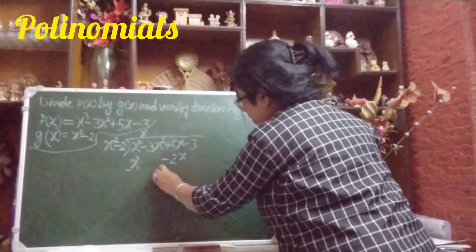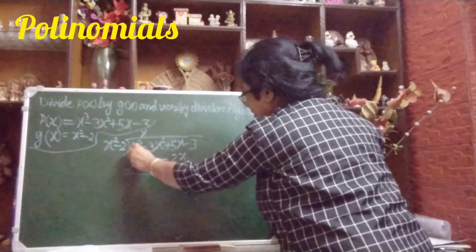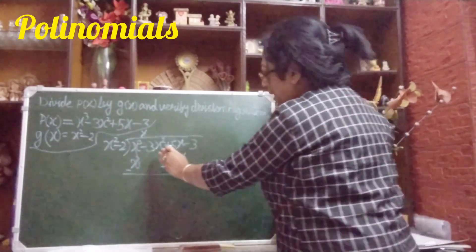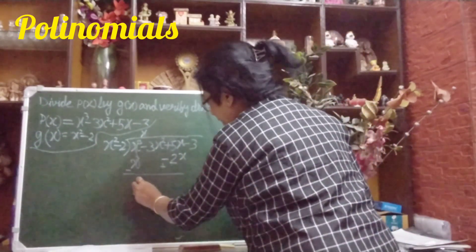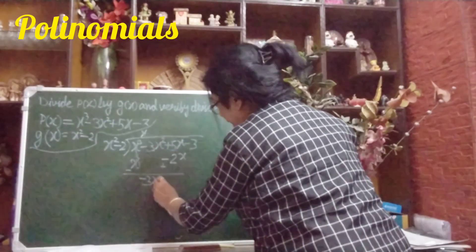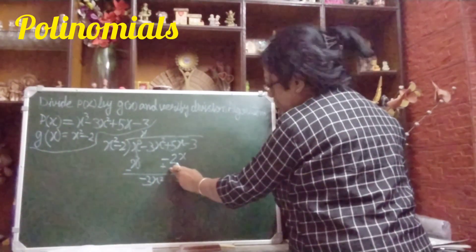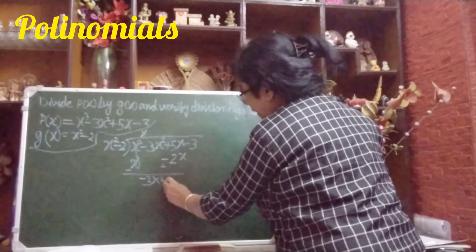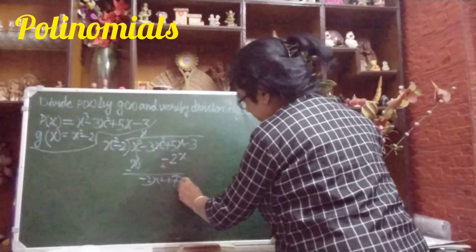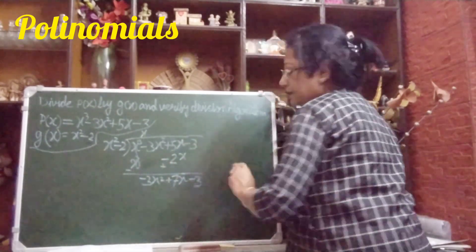Now change the sign: plus becomes minus, minus becomes plus. So x³ − x³ cancels. We bring down −3x². Then plus 5x and plus 2x gives 7x. The remainder of this step is −3x² + 7x − 3.